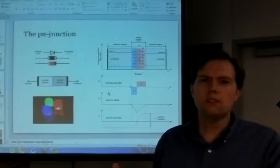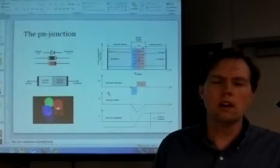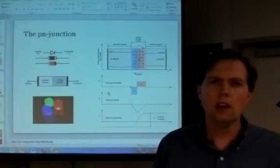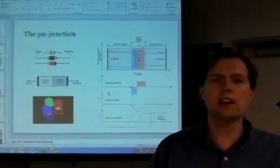Now if you take a different substance, say phosphorus, and do the same kind of trick. Phosphorus has five electrons and so in that case you end up with an N type material. You have too many electrons, electrons looking for a place to go.